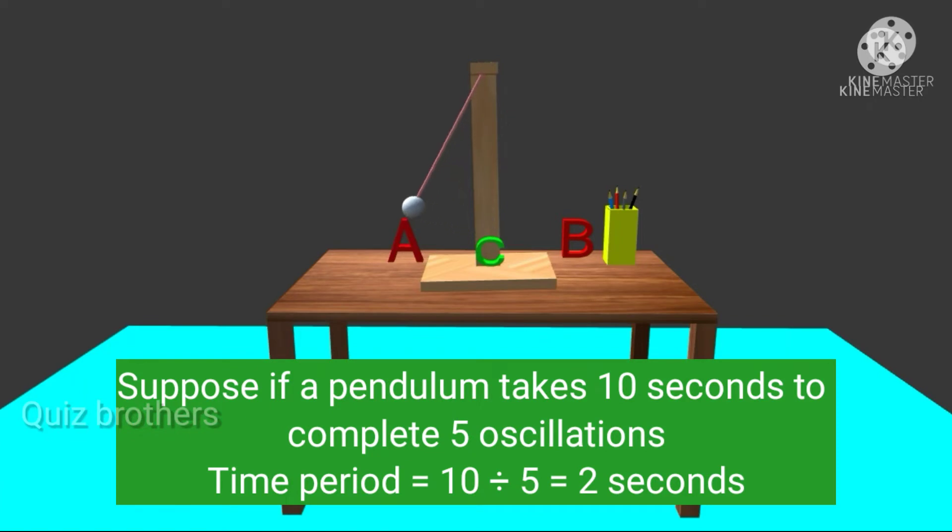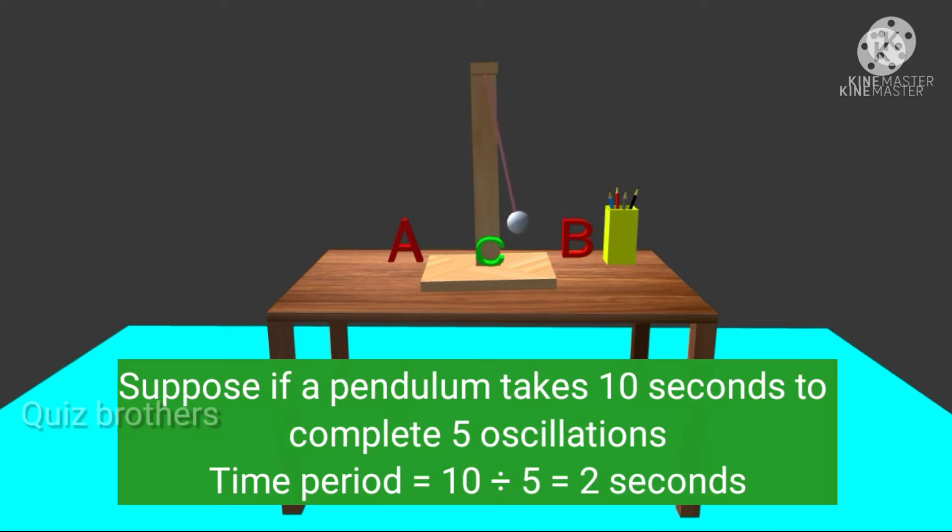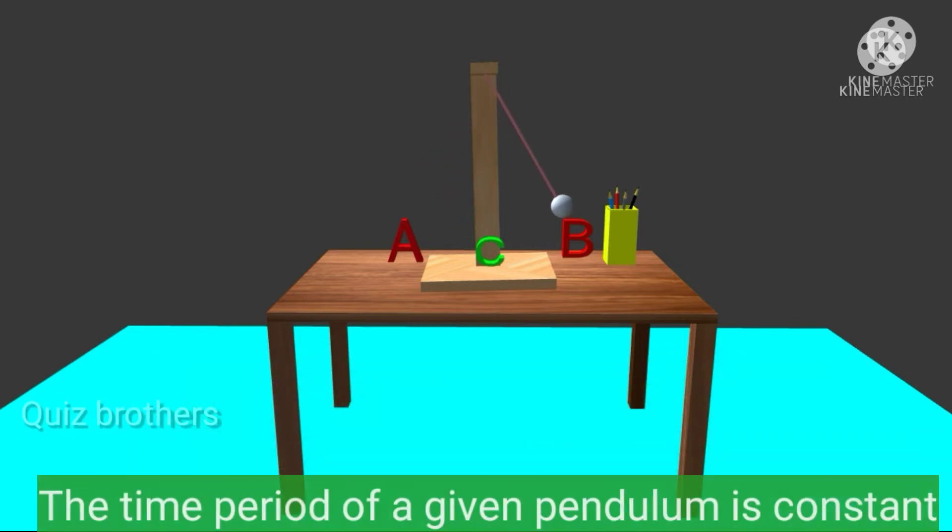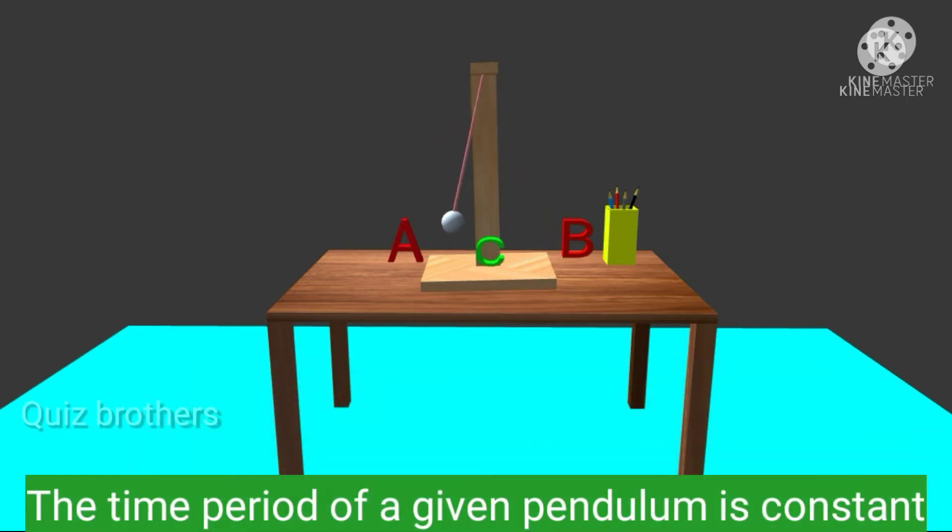Suppose if a pendulum takes 10 seconds to complete five oscillations, then the time period is equal to 10 divided by 5, which equals 2 seconds. The time period of a given pendulum is constant.